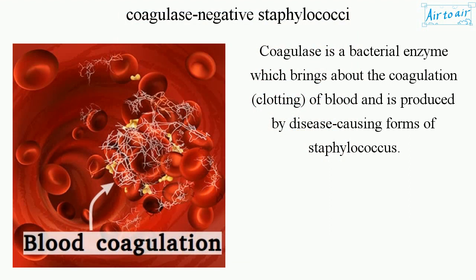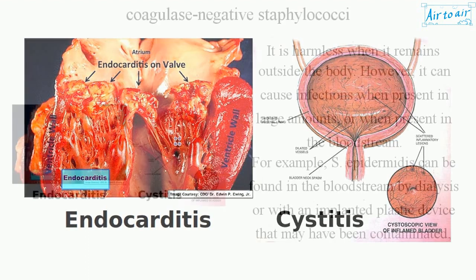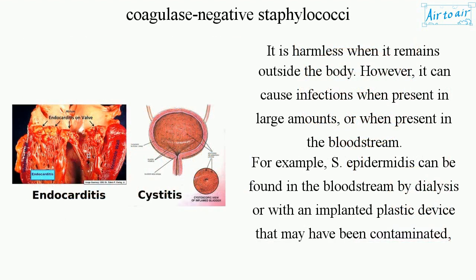Coagulase is a bacterial enzyme which brings about the coagulation, or clotting, of blood and is produced by disease-causing forms of staphylococcus. It is harmless when it remains outside the body; however, it can cause infections when present in large amounts or when present in the bloodstream.